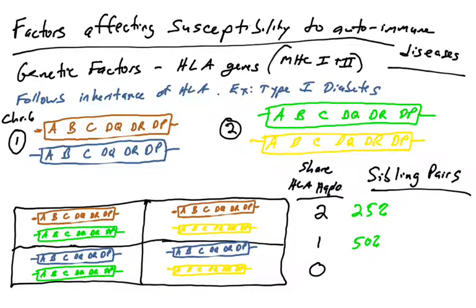We can see this when we look at sibling pairs and look at their risk of coming down with an autoimmune disorder that might run in a family. Just by random chance, sibling pairs could inherit the same haplotypes from their parents or different haplotypes from their parents. The odds that you and your sibling both have the brown haplotype from mom and the green haplotype from dad, what are the odds of that happening? 25%. The odds of sharing one haplotype with your sibling, 50%. The odds of sharing no haplotypes with your sibling? 25%.